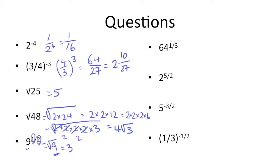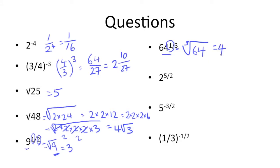Next up, we have 64 to the 1/3 power. Based on what we just talked about, we know that the bottom of the fractional exponent tells us what level root we're taking the base to, and since it's 3, it's the cube root. So we get the cube root of 64, because the 1 up here tells us we take 64 to the 1st power, which is just 64. So what cubed gets us 64? That happens to be 4, because 4 times 4 is 16, times 4 is 64.